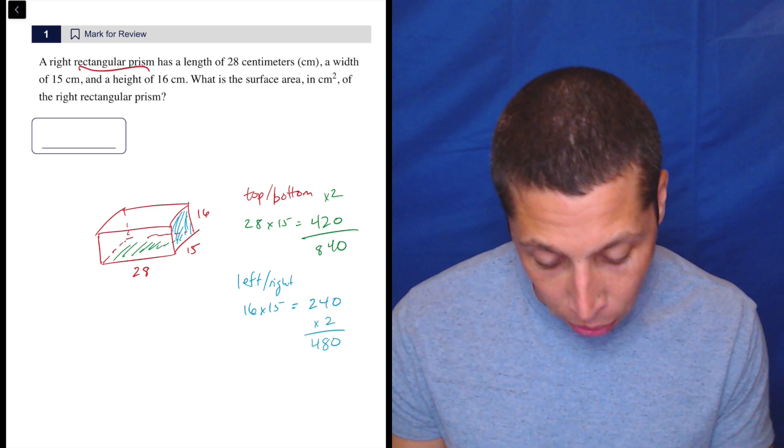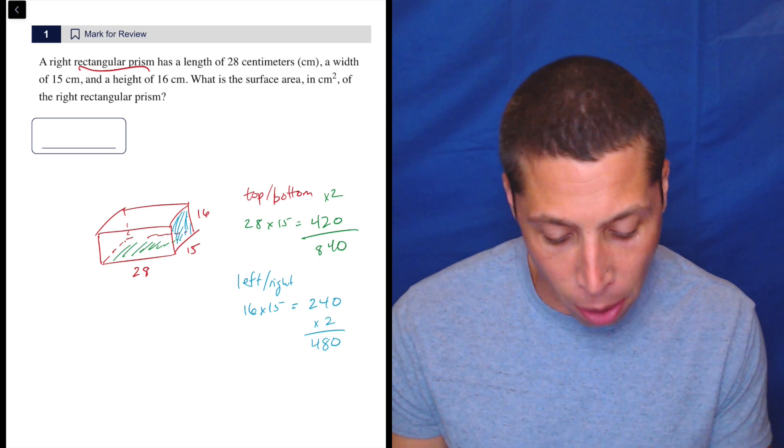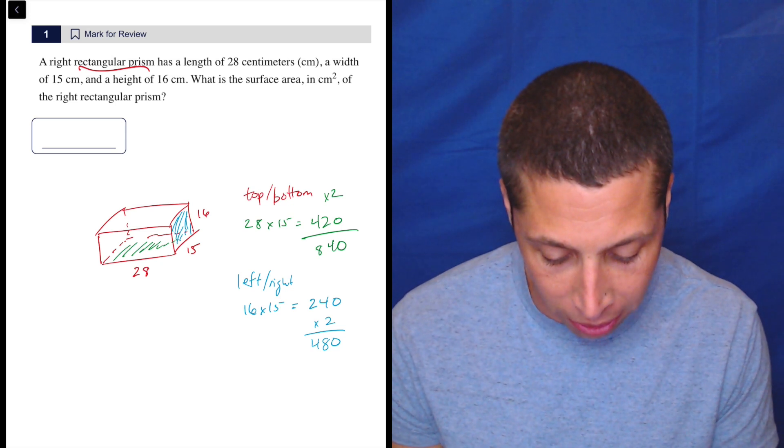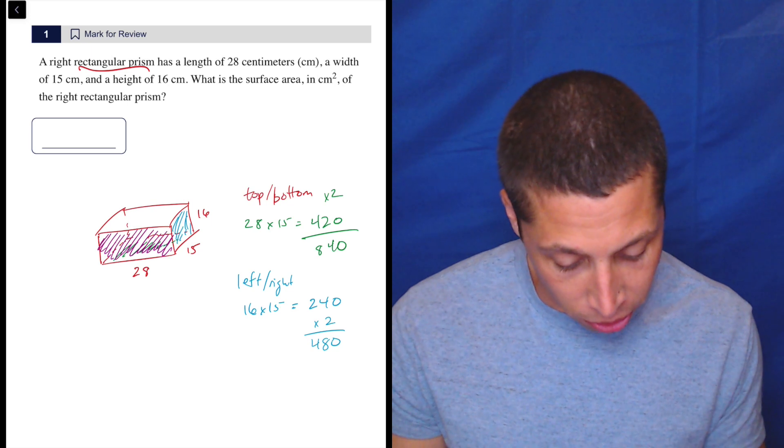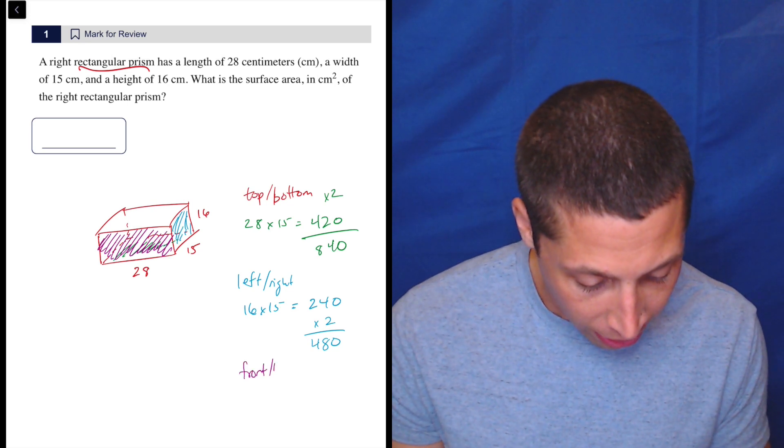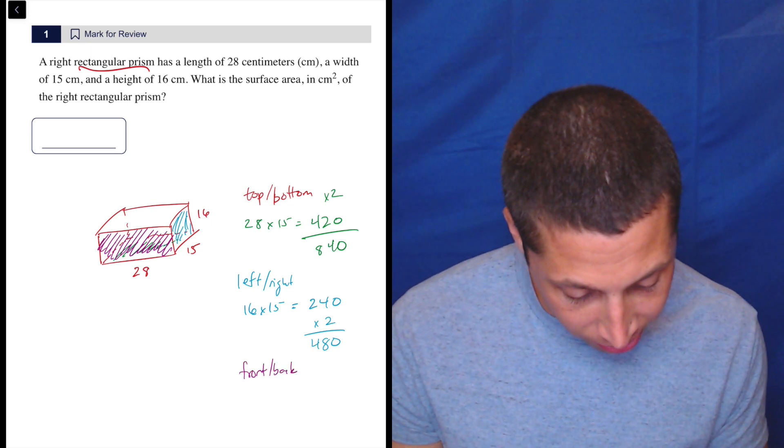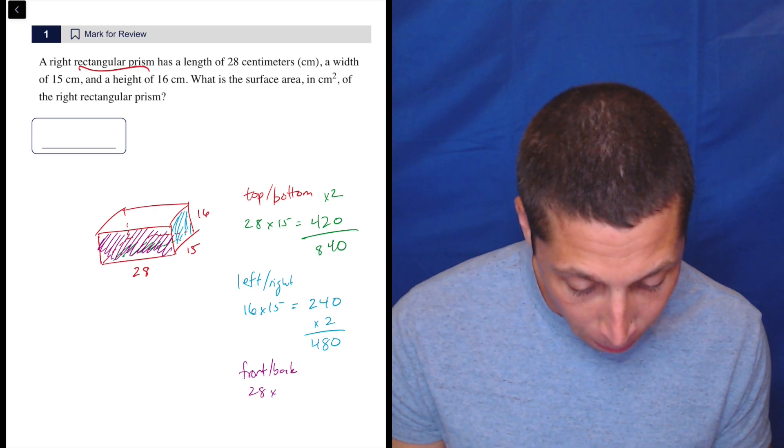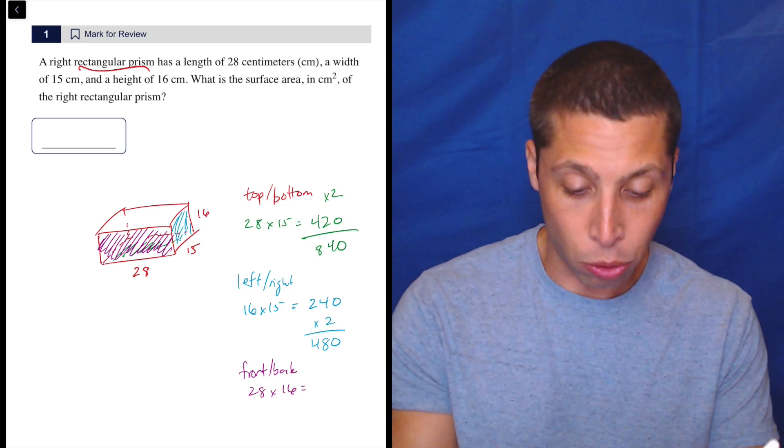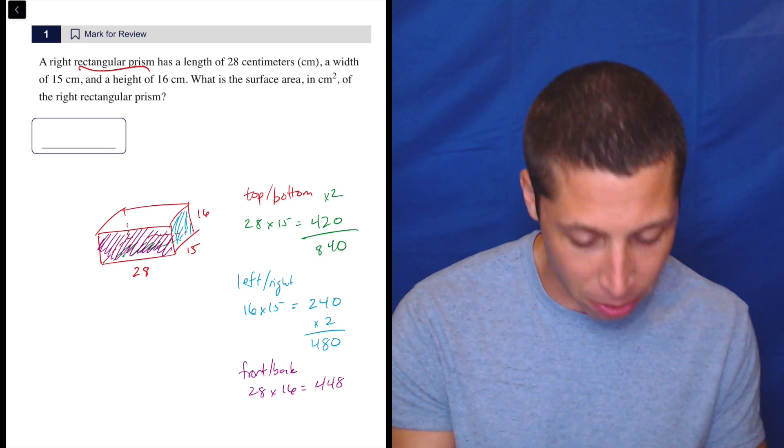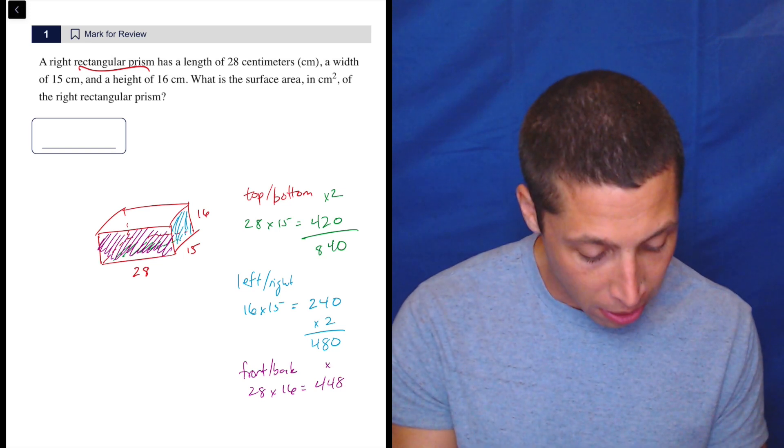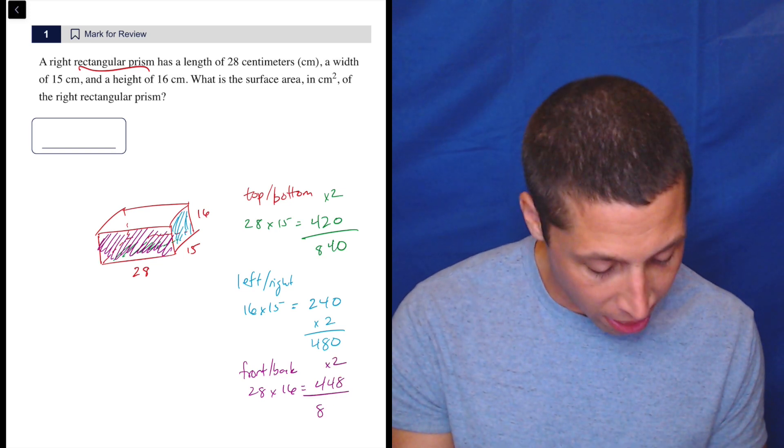And then let's finish it up here with the front and back. So now I'm going to have to kind of draw over some of the colors I already have. The front is this side right here. So the front and the back is going to be, in this case, 28 by 16. So 28 times 16 in the regular calculator is 448. That one I'm a little more nervous multiplying by two. But if I do it, I get 896.